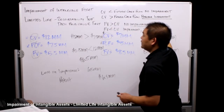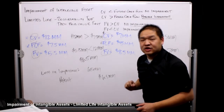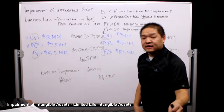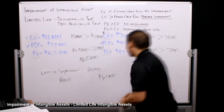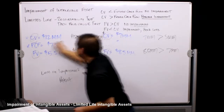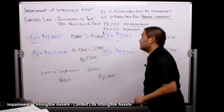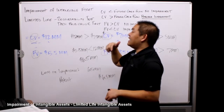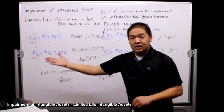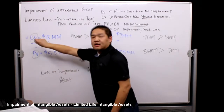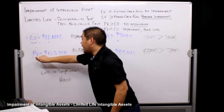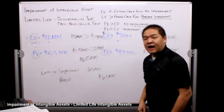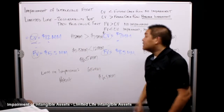Before ending this lesson — for an indefinite life intangible asset, we would not use the recoverability test. We would skip straight to the fair value test and purely compare fair value and carrying value. So if this were a trademark with an indefinite life, we would simply look at fair value versus carrying value. In the first example, fair value is less than carrying value, so we'd write it down immediately by six point five million.